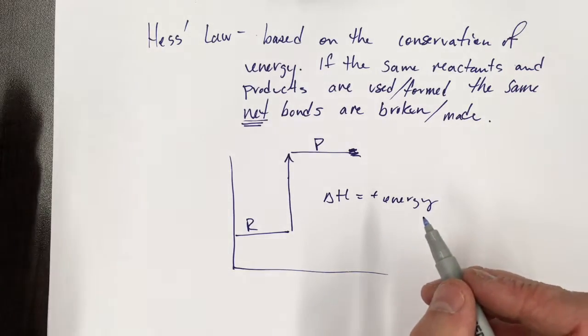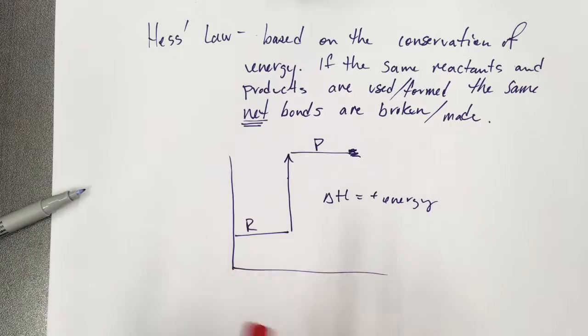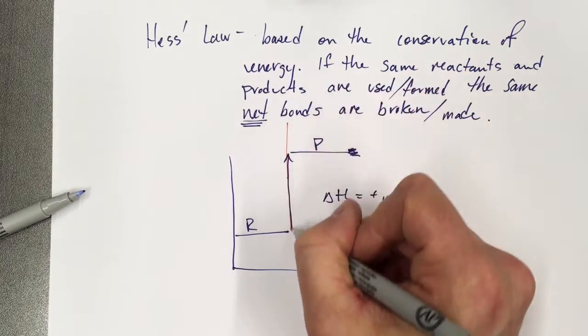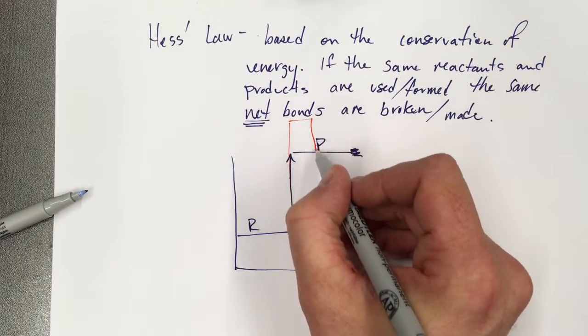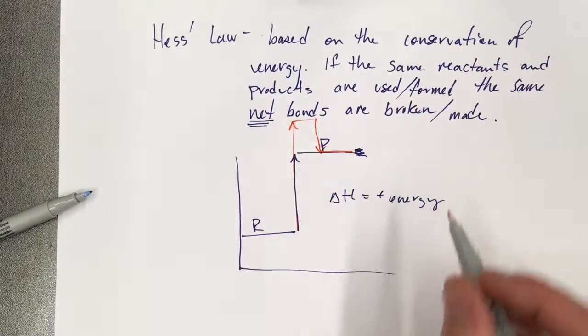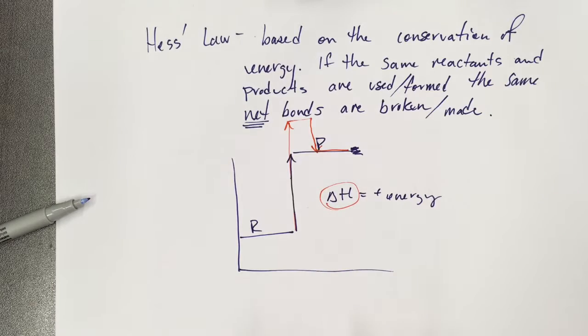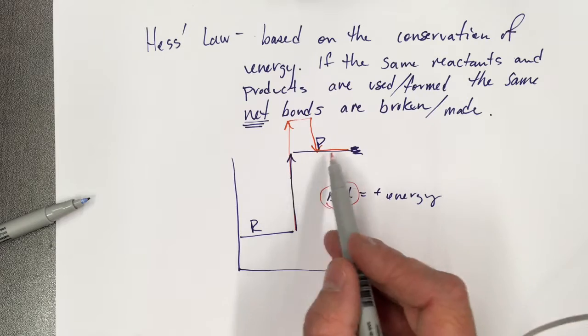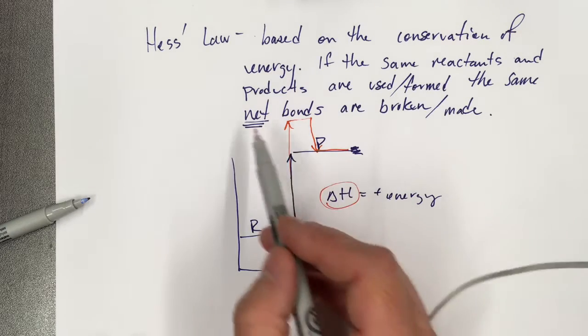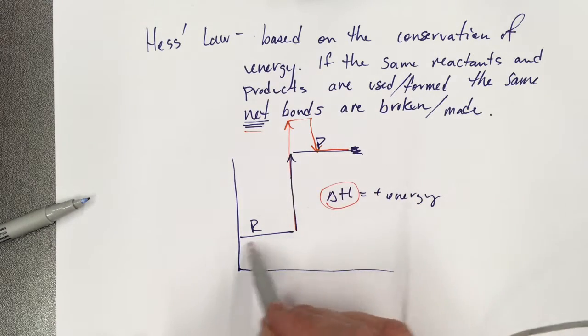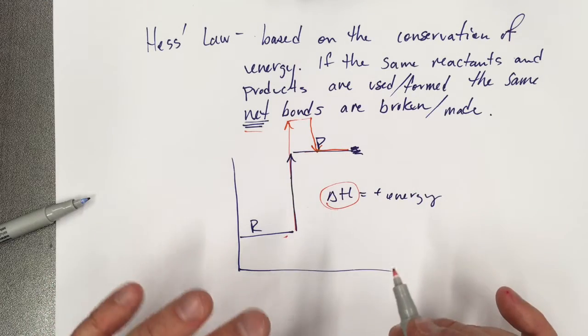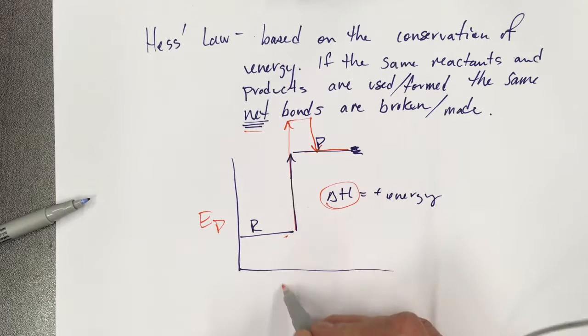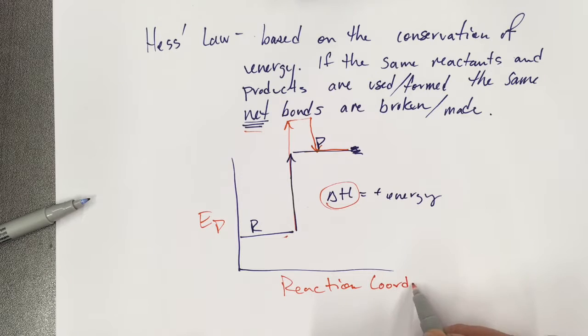But if I wanted to, I could have done a different reaction and then done another reaction to get back here, and the net change in energy would be the same because the extra energy I used here and the extra energy I got back here cancel each other out. So the net is the same. And so long as I've got the same reactants and the same product, it doesn't matter what reaction pathway I'm using because we're going to cancel a bunch of things out.